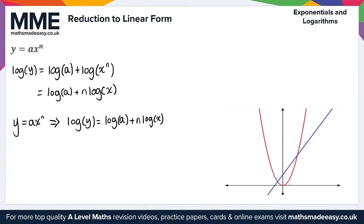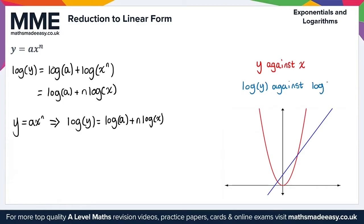Notice what we've got in red is y against x, and in blue we've got log y against log x. The straight line is represented in blue. That gives us everything we need for reduction to linear form of the form y equals ax to the power of n.